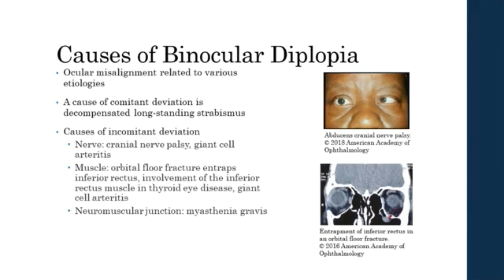Binocular diplopia is due to ocular misalignment related to various etiologies. Binocular diplopia with comitant deviation can be due to decompensated, long-standing strabismus. Infantile and childhood strabismus are not usually associated with diplopia due to suppression, which is an adaptation in which the visual neurons in the brain reduce their responsiveness to input from one eye. The causes of binocular diplopia with incomitant deviation can occur at the nerve, muscle, or neuromuscular junction.